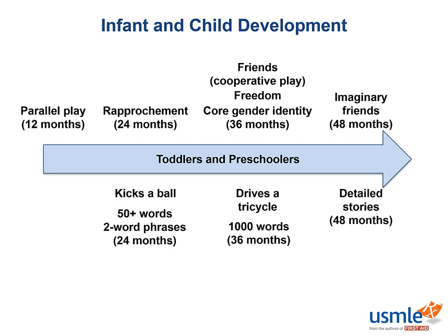Another important thing to remember is the rule for determining how many cubes a child should be able to stack. A developmentally normal child should be able to stack their age in years times three. For example, a two-year-old should be able to stack six blocks — 2 times 3 equals 6. At two years: kick a ball, have a 50-plus word vocabulary, and wander from the caregiver briefly. At three years old, a child should play with friends in cooperative play, speak in complete sentences, copy a simple shape, and ride a tricycle.